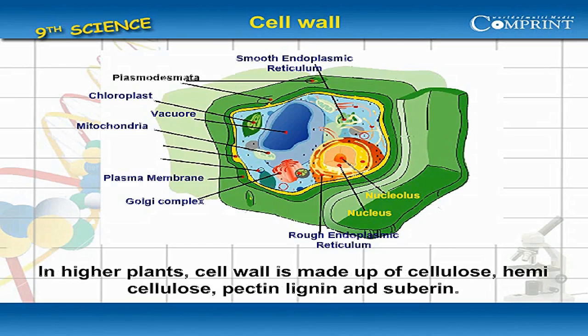In higher plants, the cell wall is made up of cellulose, hemicellulose, pectin as calcium or magnesium salts, lignin, and suberin.